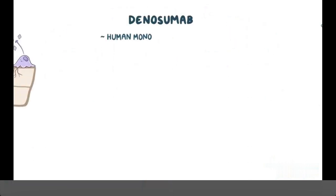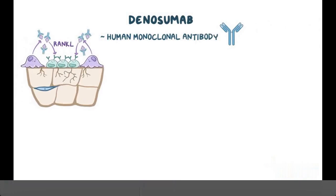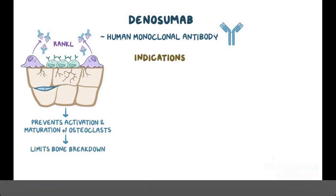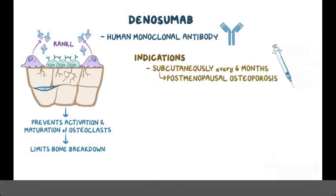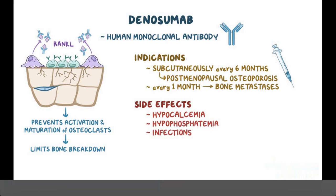Let's move on to denosumab, which is a human monoclonal antibody that binds RANK-L and prevents it from binding to RANK receptors on the surface of osteoclasts and their precursors. This prevents the activation and maturation of osteoclasts, which limits bone breakdown. For indications, denosumab can be used subcutaneously every six months for the treatment of postmenopausal osteoporosis, or every month in the treatment of individuals with bone metastases. Some common side effects of denosumab include hypocalcemia, hypophosphatemia, and infections. Moreover, just like bisphosphonates, they can cause osteonecrosis of the jaw.